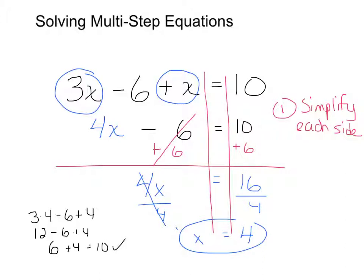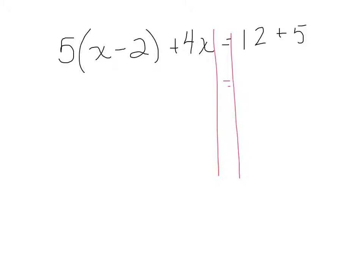I can also use the difficulty at times, where I have something like 5 times the quantity x minus 2 plus 4x is equal to 12 plus 5, maybe. The very first thing before I can do anything else is I need to simplify. Well, 12 plus 5 is going to give me 17.